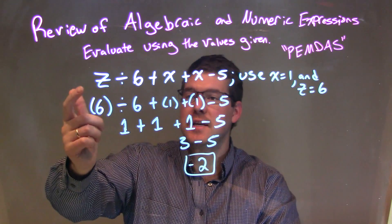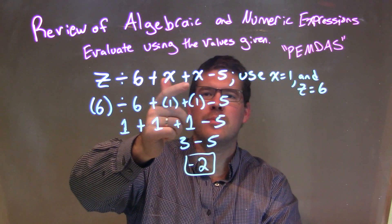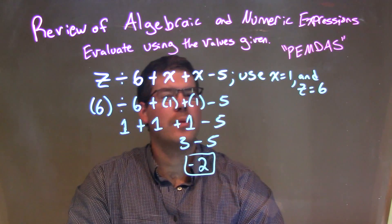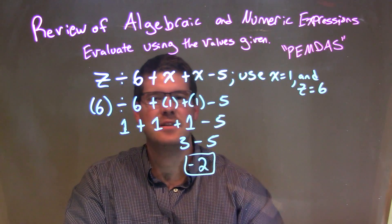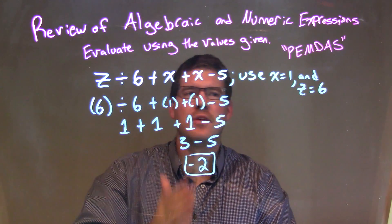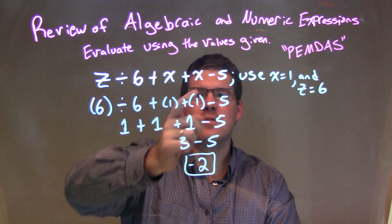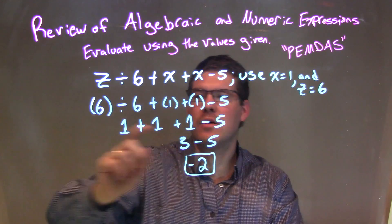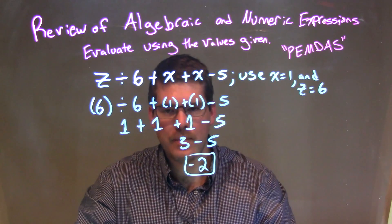So let's recap. We're given z divided by 6 plus x plus x minus 5, and we're going to use x to be 1 and z to be equal to 6. Well, I substituted every single time I saw an x I put a 1, and every single time I saw z I put a 6 in.